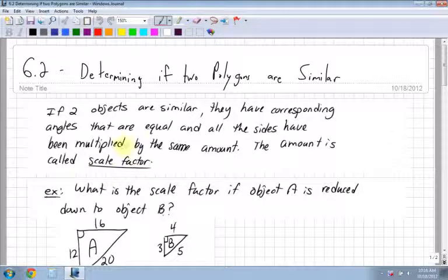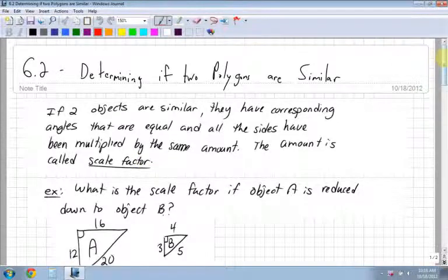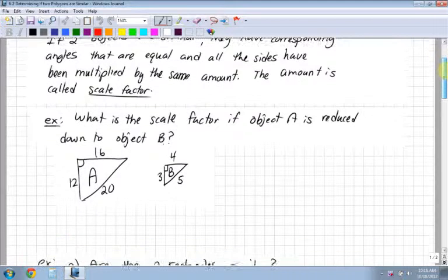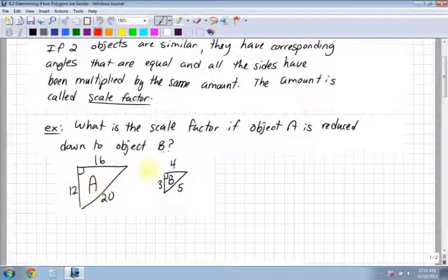So we looked last time how to find the scale factor, and remember that with that final example, because all the scale factors were different, or one of them was different, we found that they were in fact not similar. So now we're going to do the exact same thing to check to see if they're similar. So for example, what is the scale factor if object A is reduced down to object B?